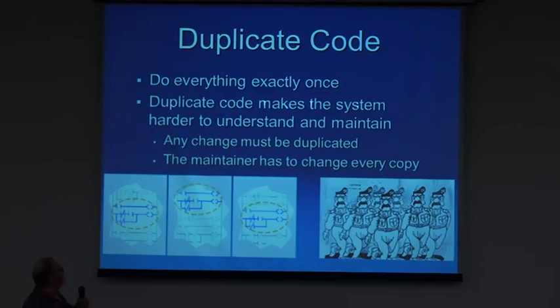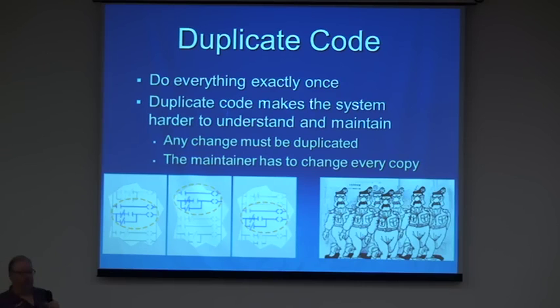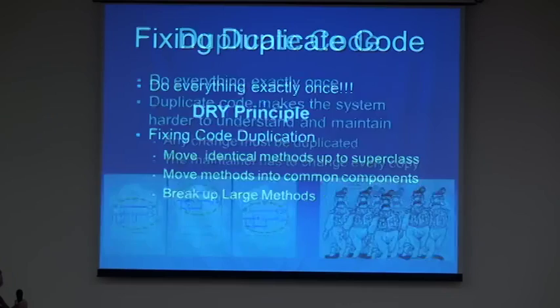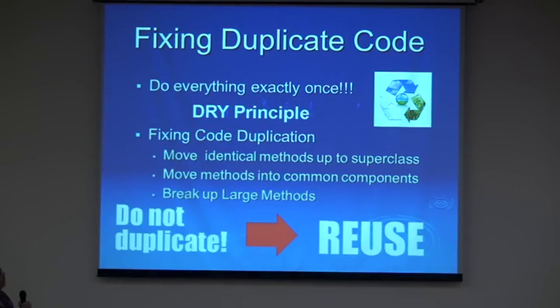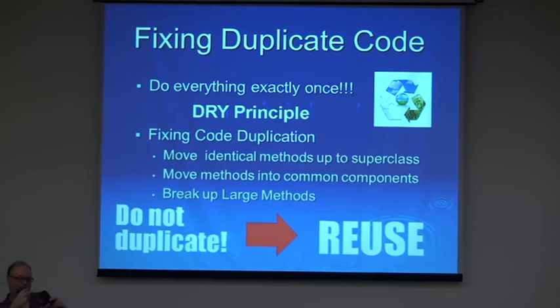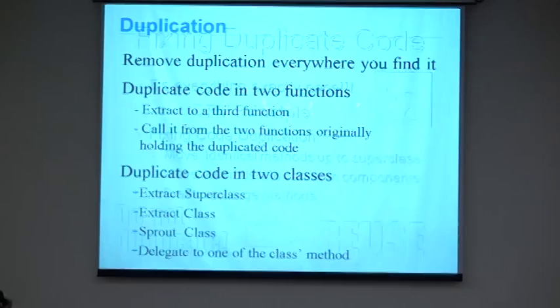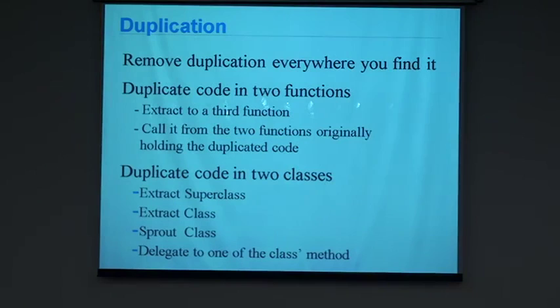Another code smell: do everything exactly once — the DRY principle, Don't Repeat Yourself. We might have many copies and therefore have to maintain things in many different places. When fixing duplicate code, you move identical methods up to the superclass, or create a common component. If a piece of code is similar in many methods, extract it to a method and call it in all repeated places. If it's repeated in different classes, create a helper class or decide which class it should stay in and delegate to it. Michael Feathers talks about sprout classes for legacy code.